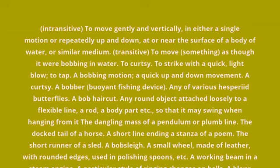Any round object attached loosely to a flexible line, a rod, a body part, etc., so that it may swing when hanging from it — the dangling mass of a pendulum or plumb line. The docked tail of a horse. A short line ending a stanza of a poem. The short runner of a sled. A bobsleigh. A small wheel made of leather with rounded edges, used in polishing spoons, etc.